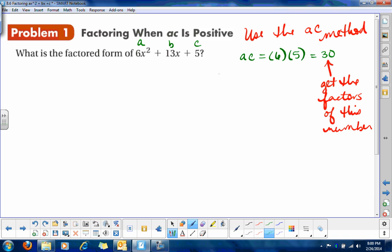Okay, so we're going to get the factors of that number. So the factors of 30. Well, of course, we've got 1 times 30. We've got 2 times 15. We've got 3 times 10. And we have 5 times 6.